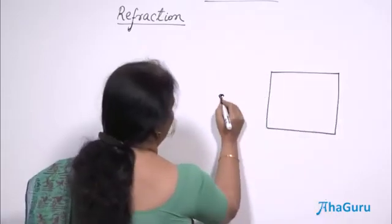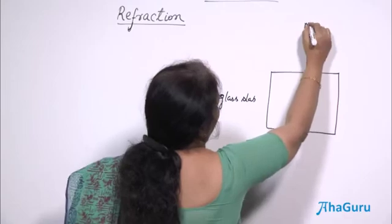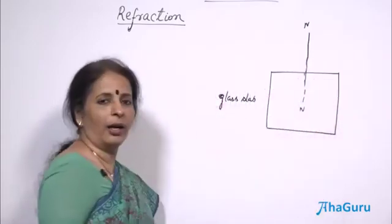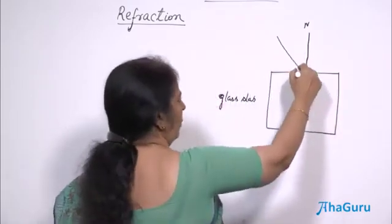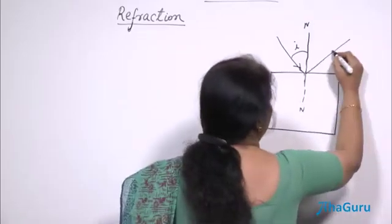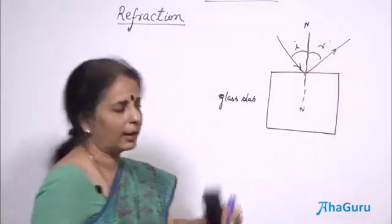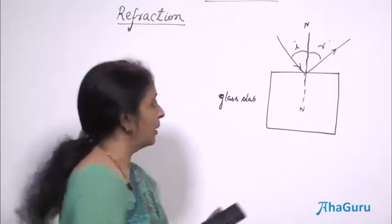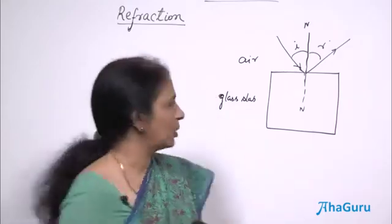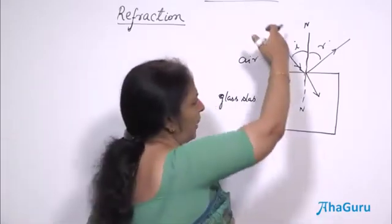Let us take this as a glass slab. You have a normal here. A ray of light is falling on this point at the normal — this is the angle of incidence. Naturally some of the light ray will be reflected, with the rule that angle of incidence equals angle of reflection. Since this is the glass slab and this is air, some of the light rays will also pass through the glass slab because it is transparent. But we find that it does not follow the straight path as it was supposed to.